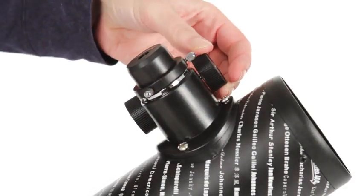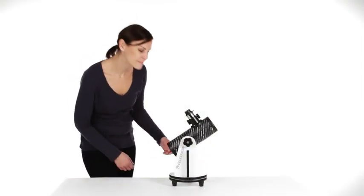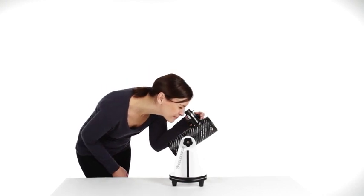Make any fine adjustments while looking through the low-power eyepiece. Once you've centered your object, get a closer view with the high-powered eyepiece.